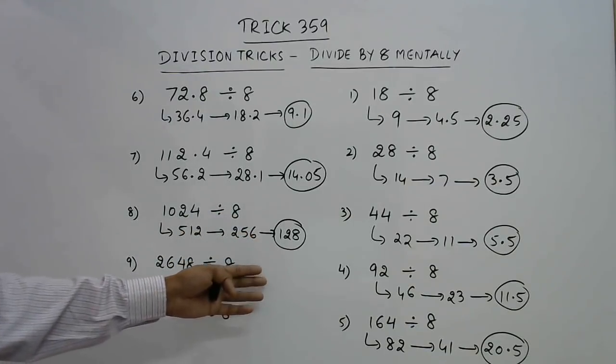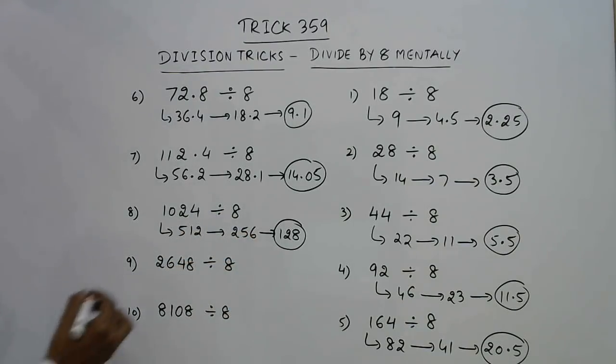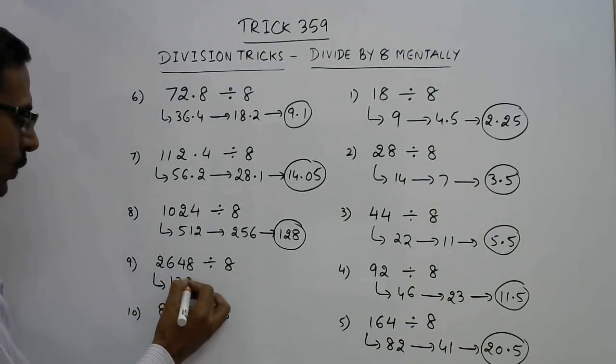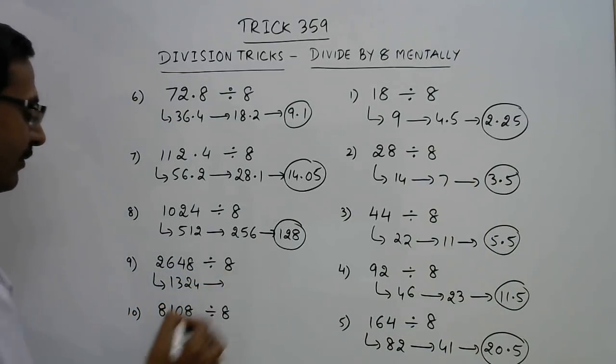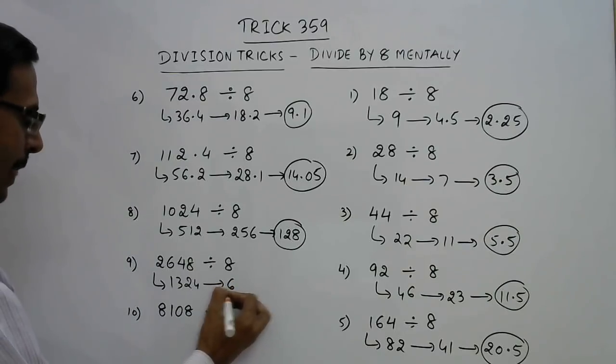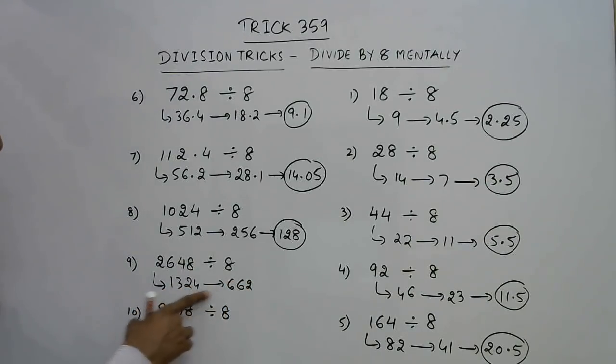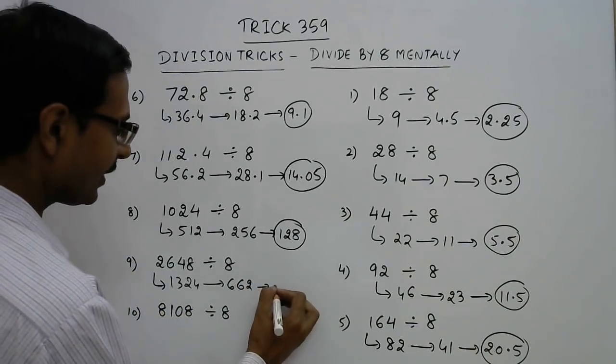2648 divided by 8: take half, 1324. Take half again, 662. Take half again, 331. This is the quotient when you divide 2648 by 8.